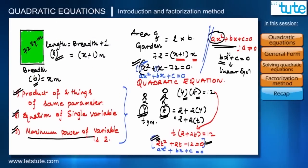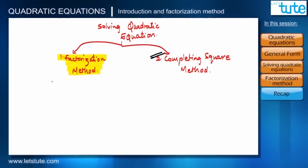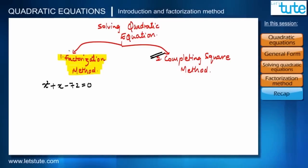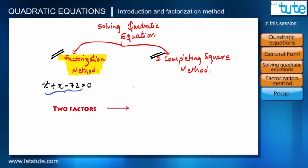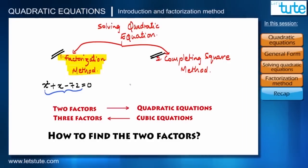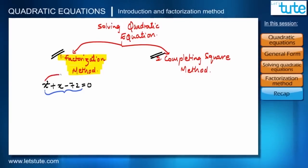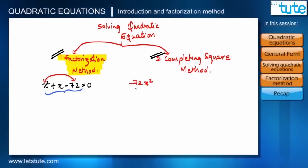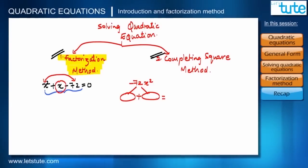According to the factorization method, we have to convert the left-hand side into two factors — two because it is a quadratic equation. If it were a cubic equation we would need three factors. To find those two factors, first multiply the first term and the third term: we get −72x². We then need to find two factors of −72x² such that when we add them we get the middle term, which is x.